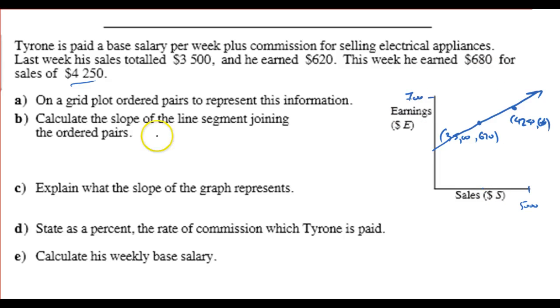Let's calculate the slope. The slope is going to be rise over run. So, Y2 minus Y1 over X2 minus X1. And we have $680 minus $620 over $4,250 minus $3,500. This is going to be $60 over $750. So basically, if I simplify that, I'll get $6 over $75. And again, keep in mind that both of these are dollars.